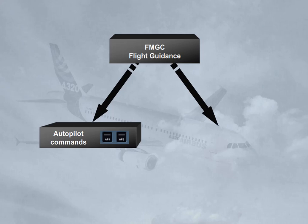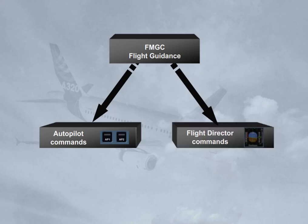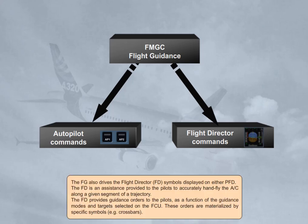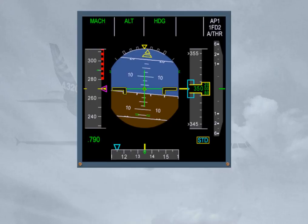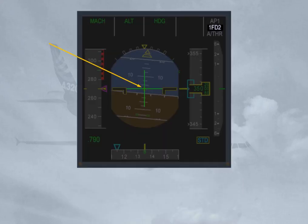The flight guidance also drives the flight director, or FD, symbols displayed on either PFD. The flight director is an assistance provided to the pilots to accurately hand-fly the aircraft along a given segment of a trajectory. The flight director provides guidance orders to the pilots as a function of the guidance modes and targets selected on the FCU. The symbols on PFD1 are driven by FG1, and those on PFD2 are driven by FG2.